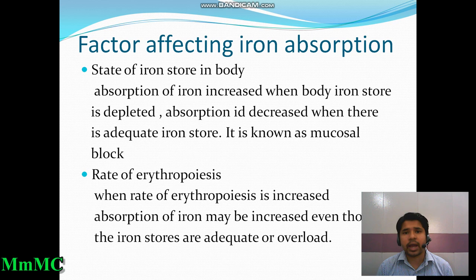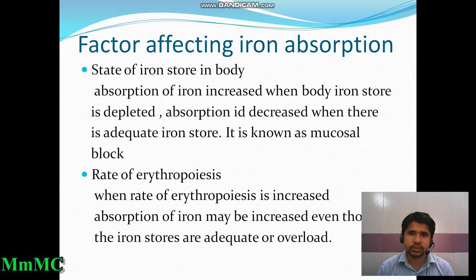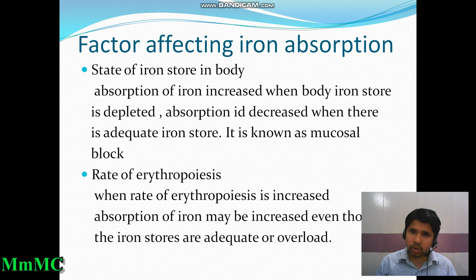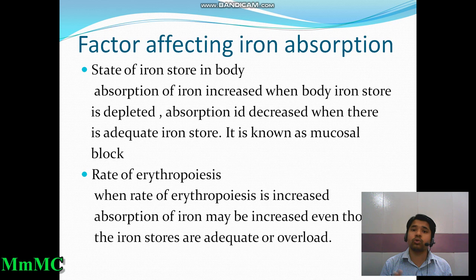Several factors affect iron absorption. First, the state of iron stores in the body: absorption increases when body iron stores are depleted, and decreases when there is adequate iron store. This is known as mucosal block — a defensive mechanism by which no excess iron is absorbed from the GI tract when the body does not need it.